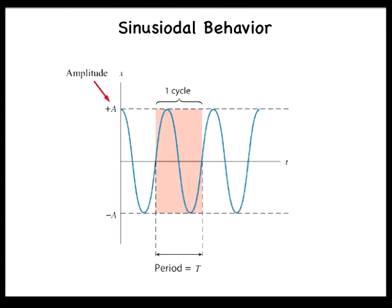In the graph, one complete cycle is highlighted. It starts at x equals 0, goes to the maximum positive displacement a, passes through x equals 0 on its way to the maximum negative displacement negative a, and then returns to x equals 0.